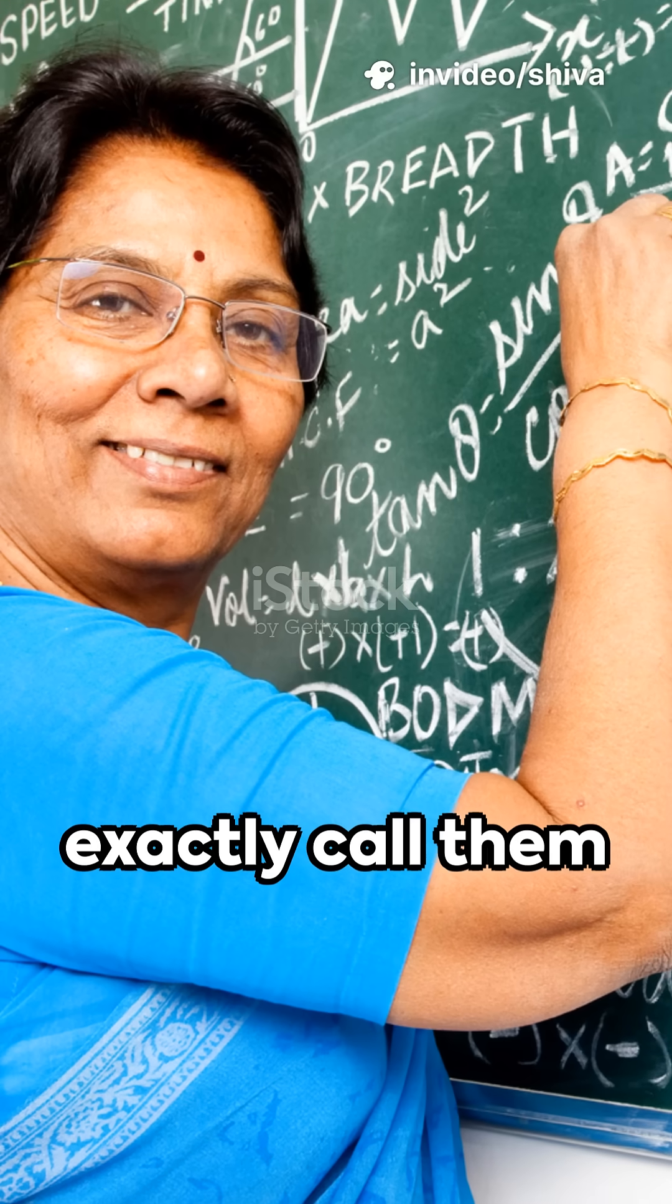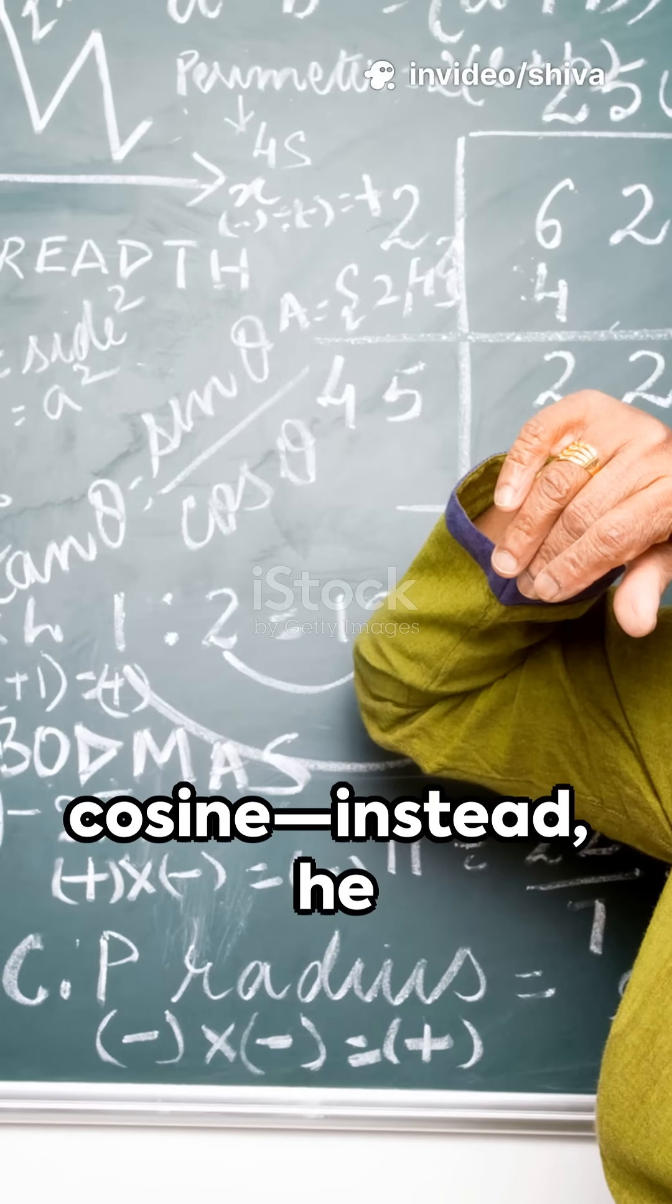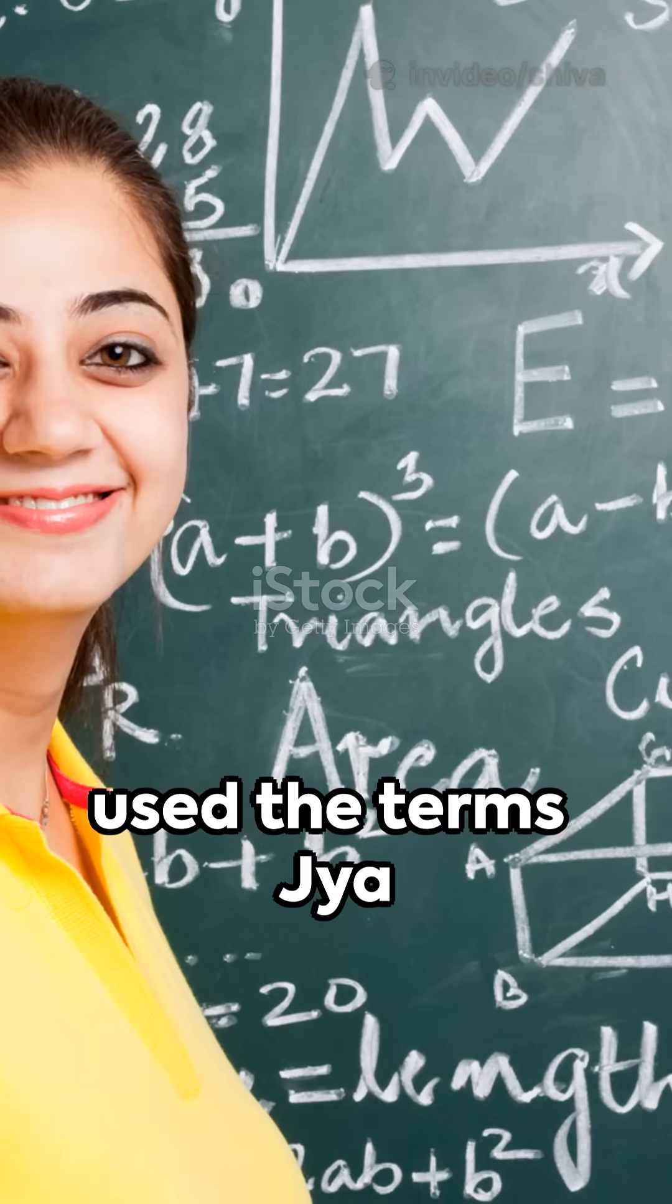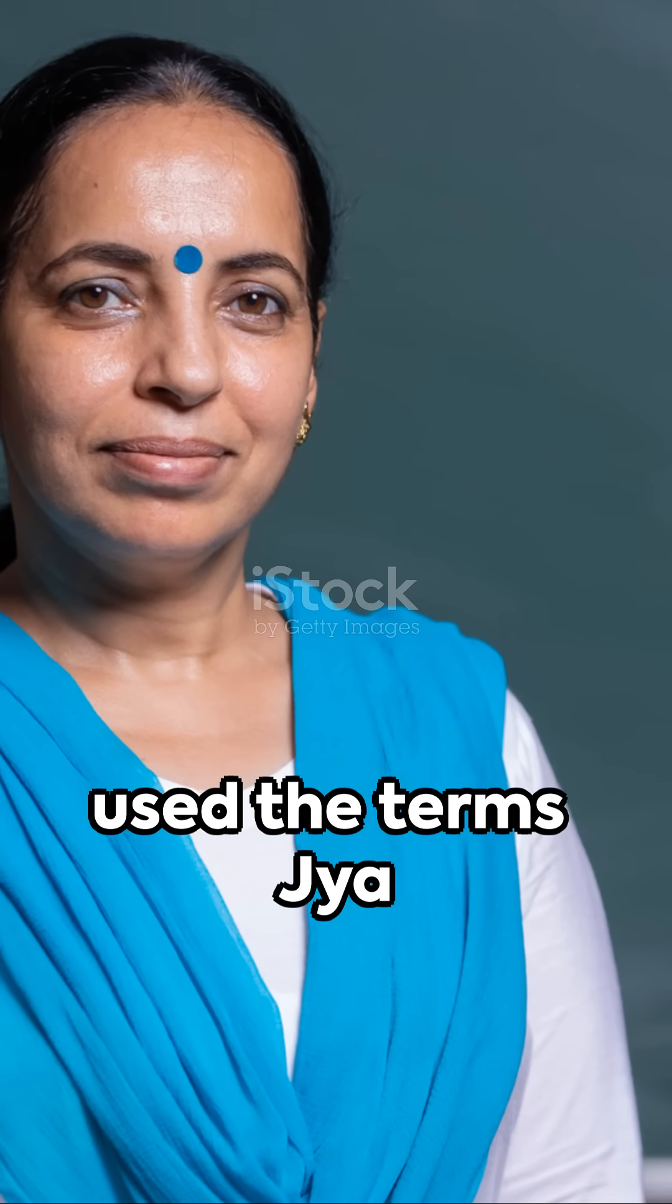But wait, he didn't exactly call them sine and cosine. Instead, he used the terms jia and kojya.